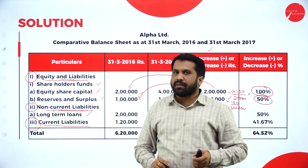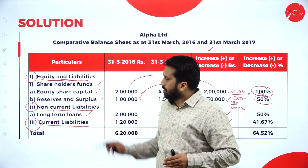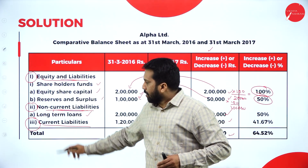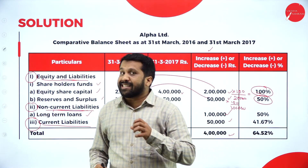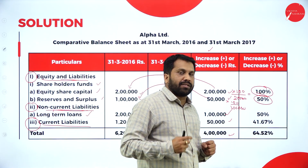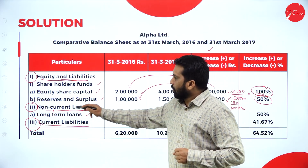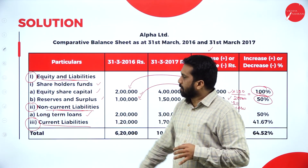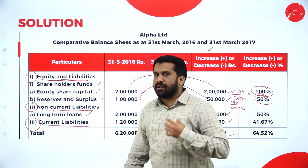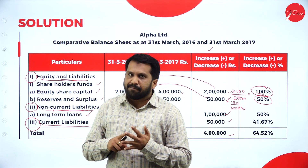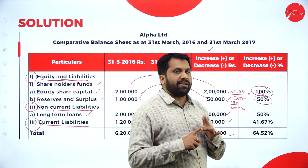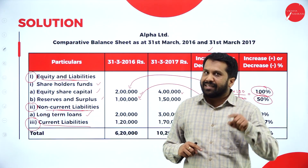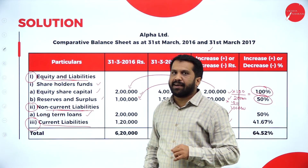What will come under non-current liability? All the secured loans, all the long-term loans, all the debentures come under non-current liability. Again: secured long-term debentures come under non-current. What comes under current liability? All the creditors, bills payable, outstanding liabilities, all the provisions, bank overdraft, and short-term loans — these things come under current liability.